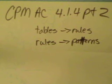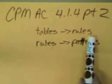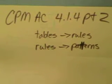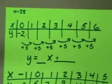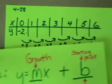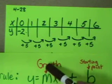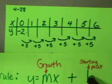Welcome to section 4.1.4 part 2. We ran out of time on the other one but we do need to cover this. We are going through fast. This one will cover tables to rules and rules to patterns. So we're going to show you the tables that they gave you in the book. Now remember that this is going to represent growth and this is the starting point.